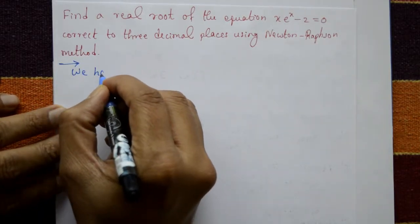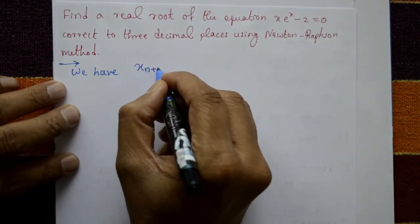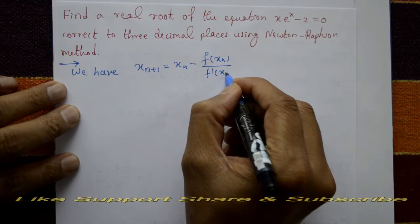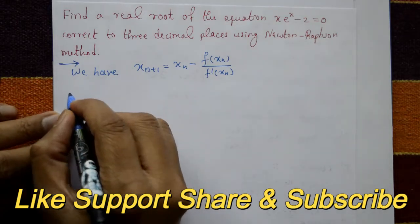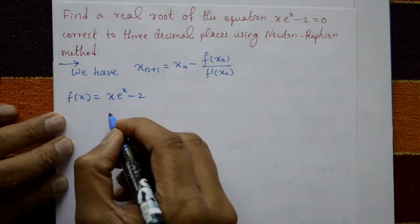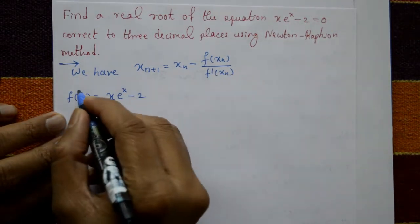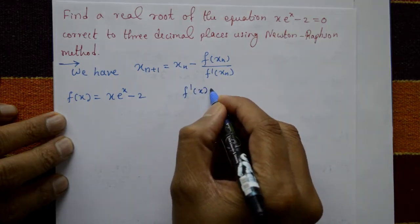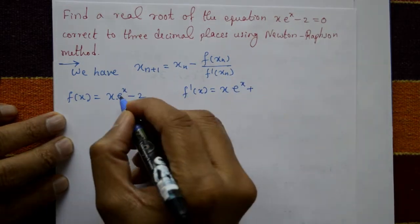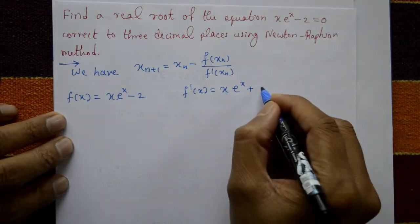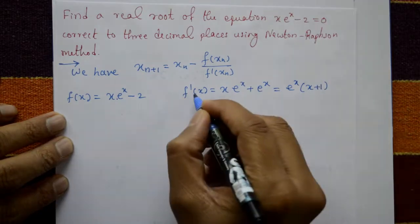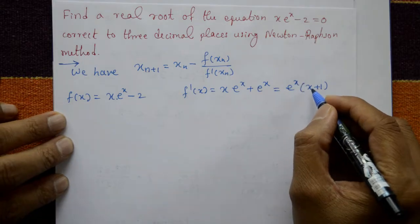First, write the Newton-Raphson formula: x_{n+1} = x_n minus f(x_n) divided by f'(x_n). Now f(x) is given as x·eˣ minus 2. Differentiating using the product rule: f'(x) = x·eˣ + eˣ = eˣ(x + 1).